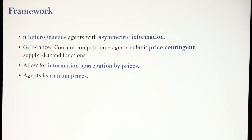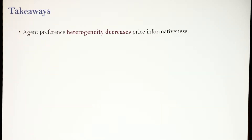We use the most simple model that captures the key features from these real-life examples: heterogeneous agents with asymmetric information. We look at a generalized Cournot competition where firms submit price-contingent demand functions, and we allow the price to aggregate information so agents can learn from prices. Because I have only 18 minutes, I'll begin with the ending. First, we show that agents' preference heterogeneity — induced in the paper by different trading costs — reduces price informativeness, meaning prices fail to aggregate information completely when agents are heterogeneous.